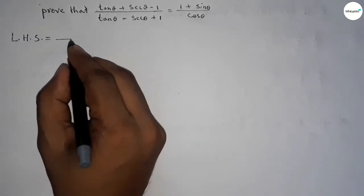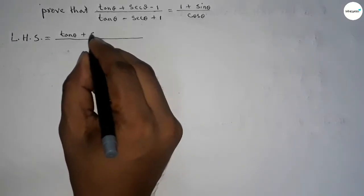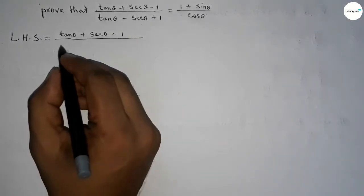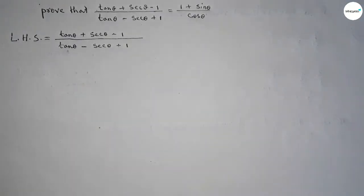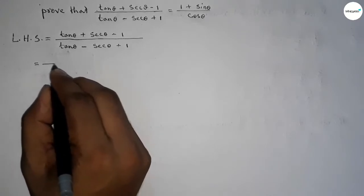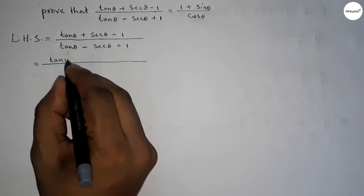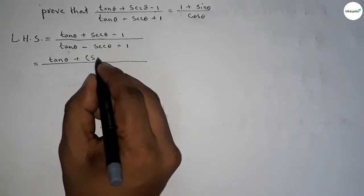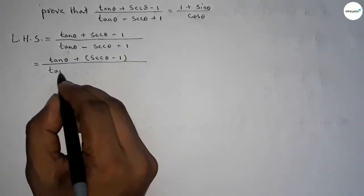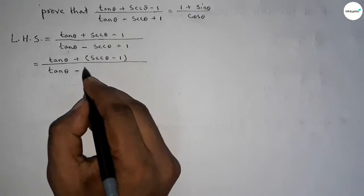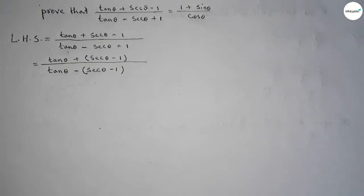Left hand side equals (tan θ + 6θ - 1) over (tan θ - 6θ + 1). Next, we can write it this way: tan θ plus first bracket (6θ - 1). In the denominator, taking minus common, we get tan θ minus (6θ - 1). Keep that in mind.